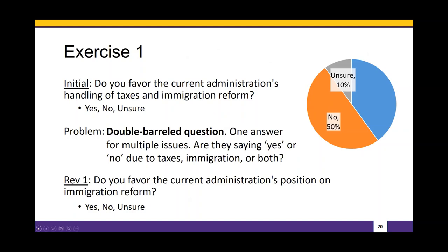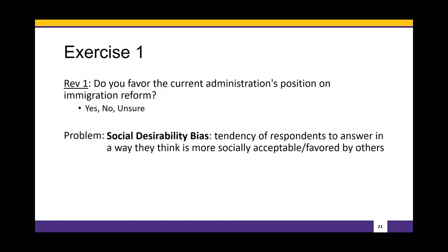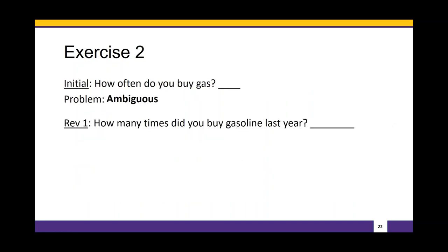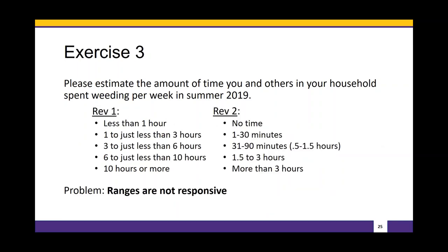We can reformulate this to only be about a single issue — immigration. But this still has issues: 'Do you favor the current administration's position on immigration reform?' This leads to social desirability bias — we've inherently informed the respondent that the right answer is to favor the current immigration reform. We should reformulate to a more balanced, neutral perspective: 'What is your opinion of the current administration's handling of immigration reform?' I have a few other exercises but we're running out of time, so I'll save those and answer specific questions if people have them.